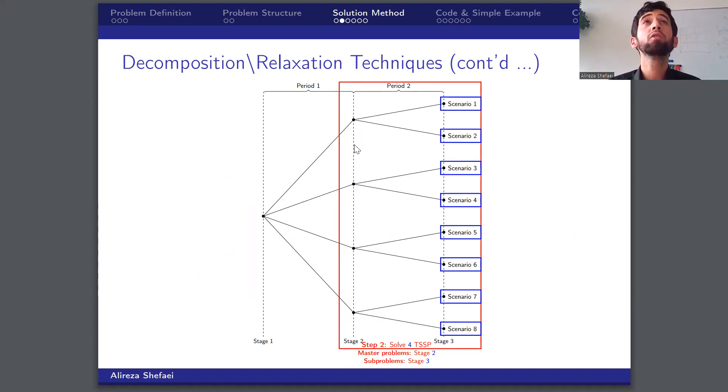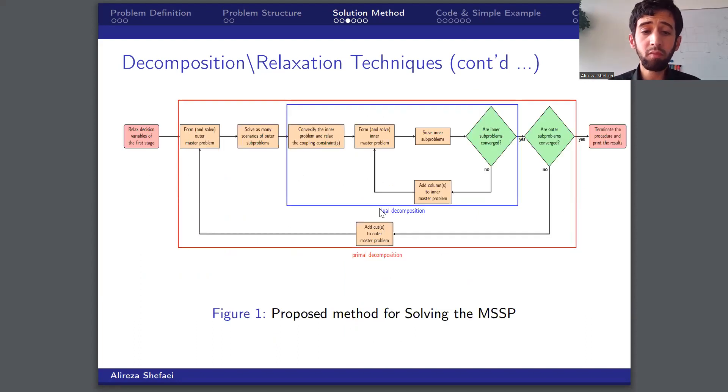This flowchart neatly integrates the method outlined in the decision tree. The blue box represents the inner dual decomposition, and the red box represents the outer primal decomposition.